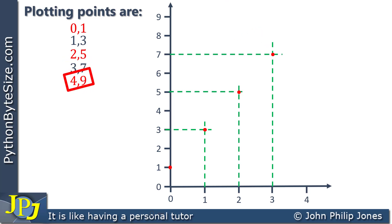And then finally we've got 4, 9. So I'll put a dotted line coming up from the 4, and I'll come across from the 9, and that's where I will have the plotting point.